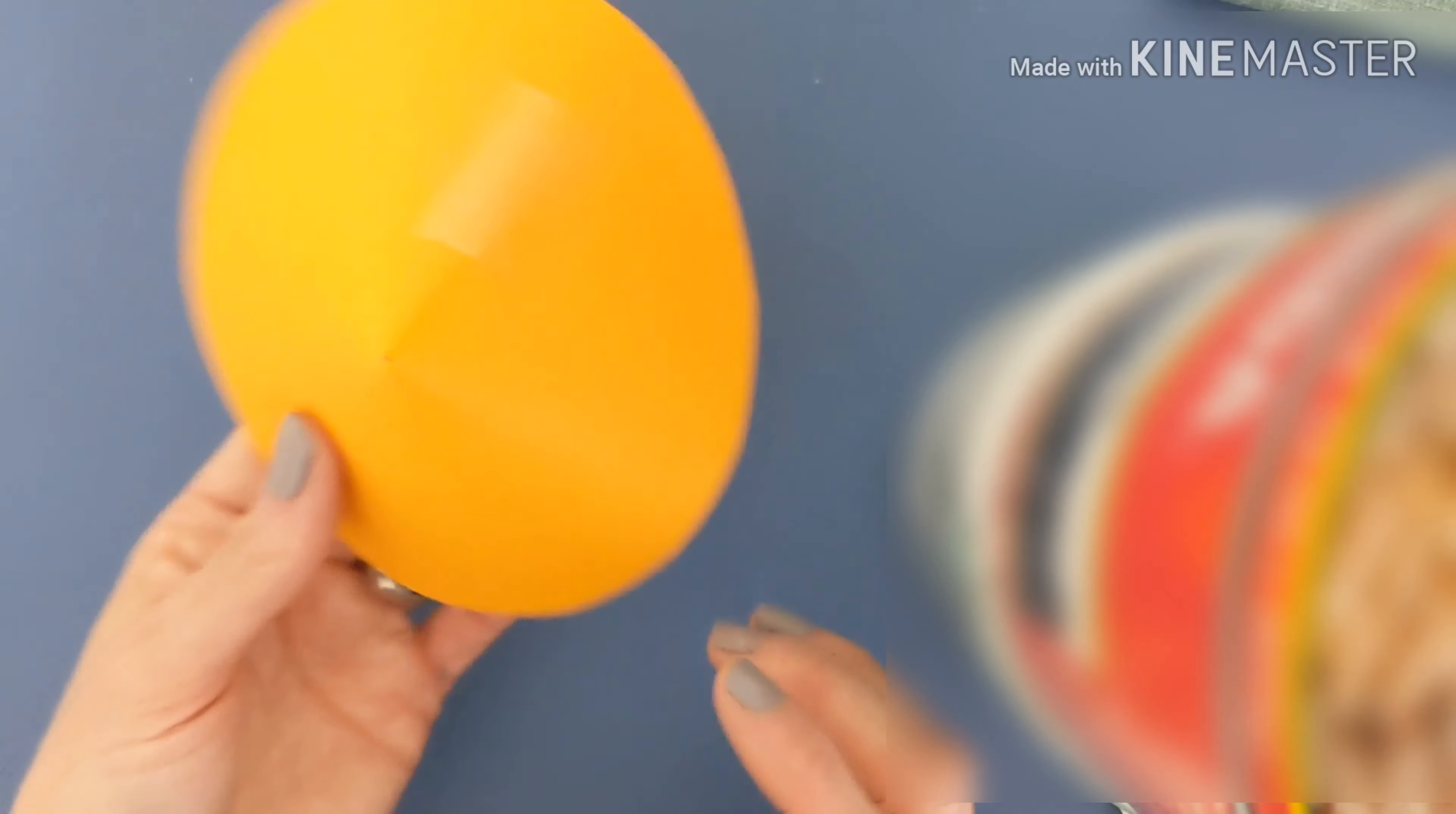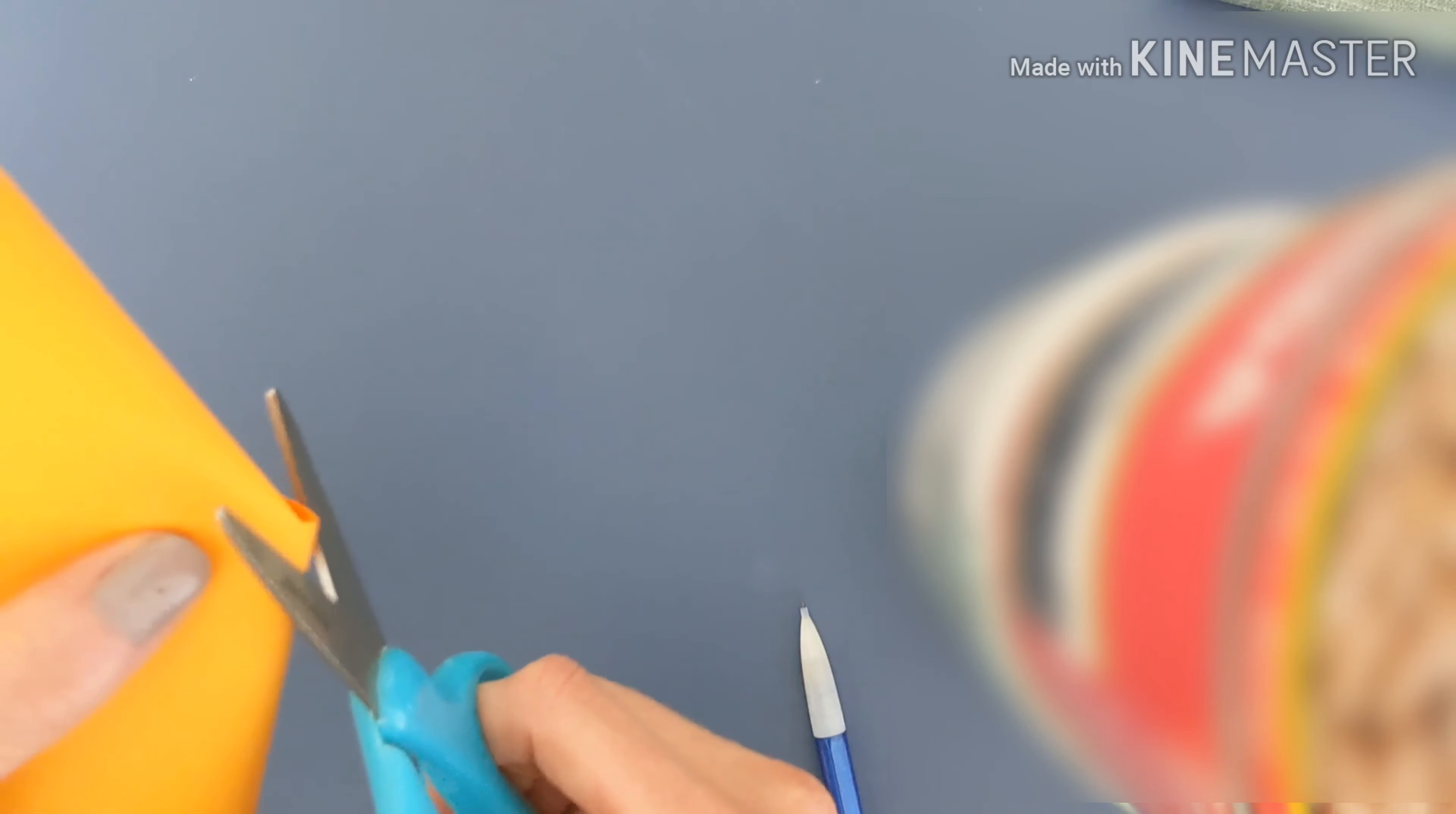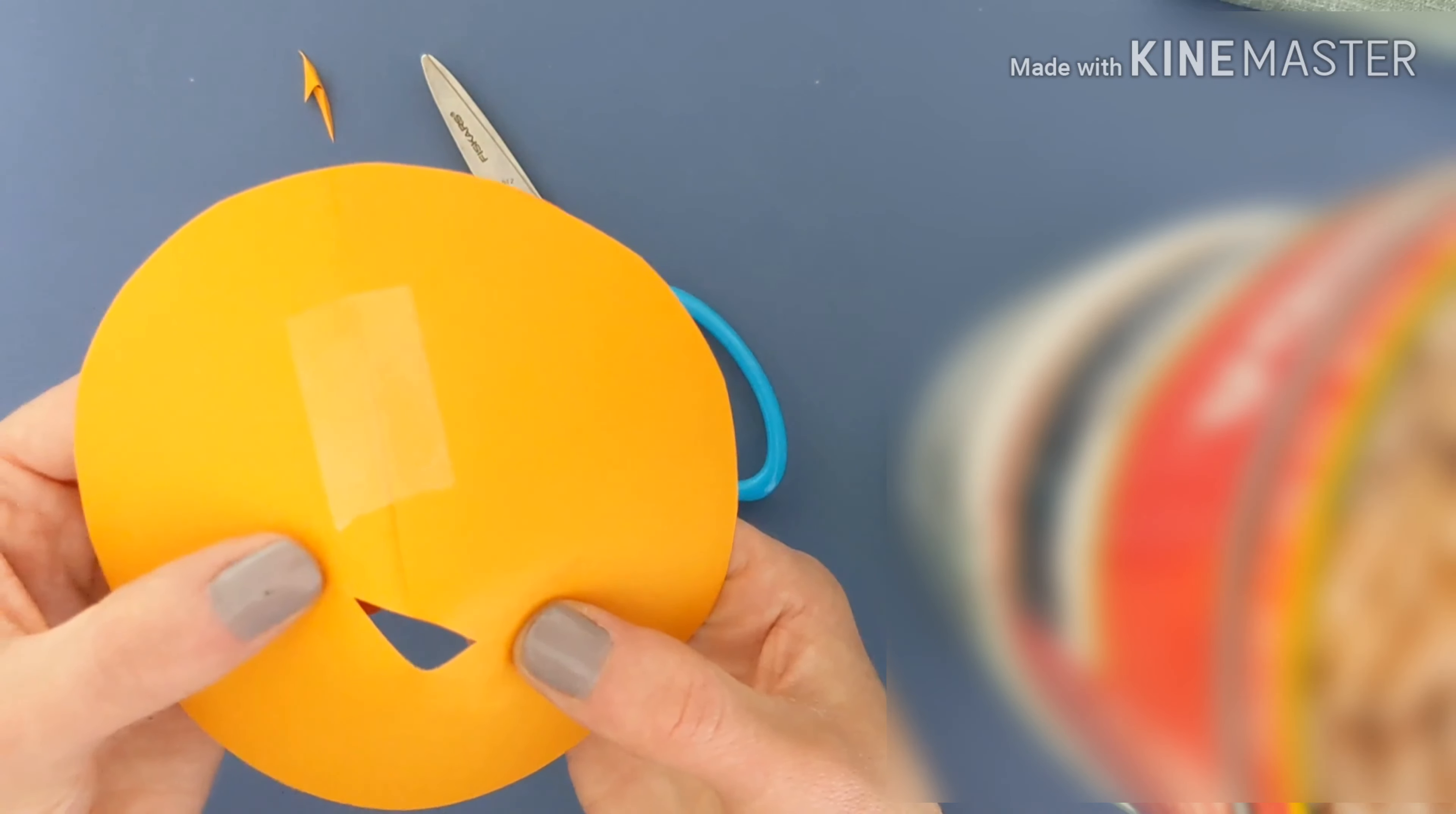Good, so you should have a nice cone. Now, this next part, if you're not comfortable doing it, ask your parents for help. What you're going to do is kind of fold your cone a little bit in half and just cut off the tip of your cone. Nice work. So it should create a little hole at the bottom.